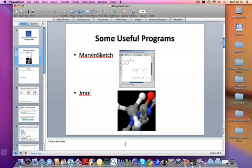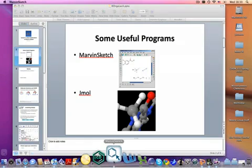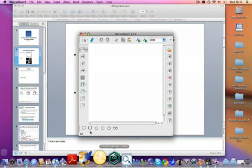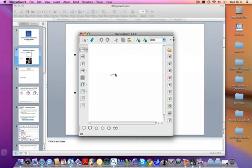So MarvinSketch, which I can actually pull up right here, is a program that you can use to draw structures that will automatically take into account things like valence and whatnot. So for instance, if I draw a single bond there, you can see it automatically adds in carbons and the proper number of hydrogens. And then if I add yet another bond, it takes hydrogens away